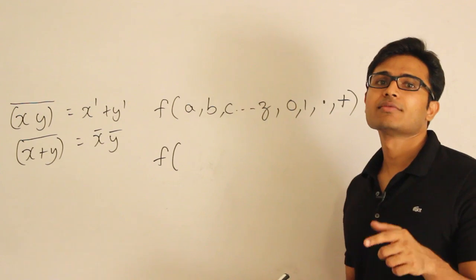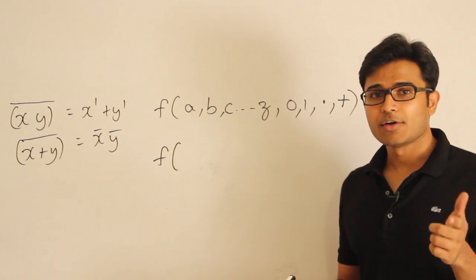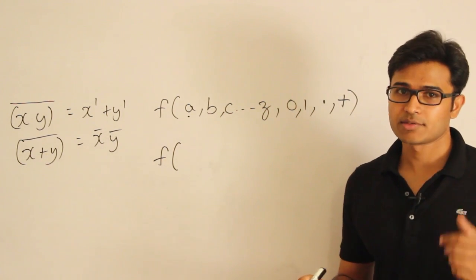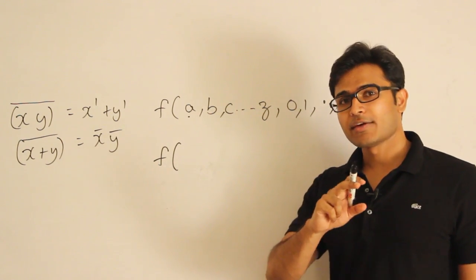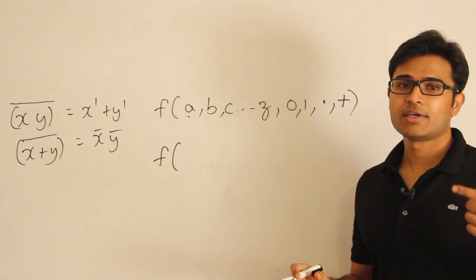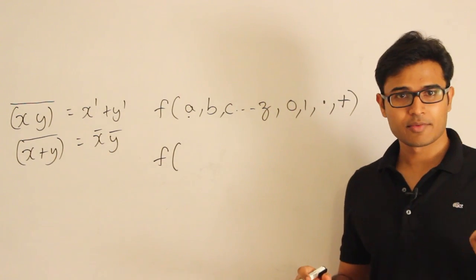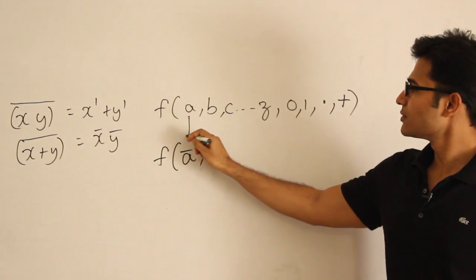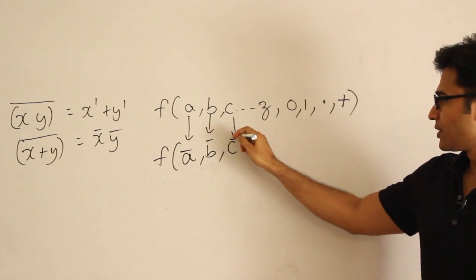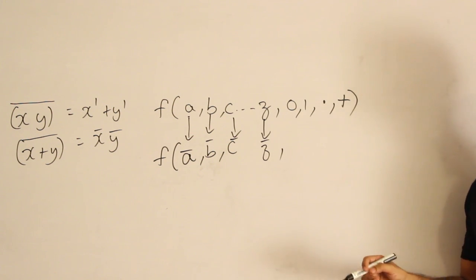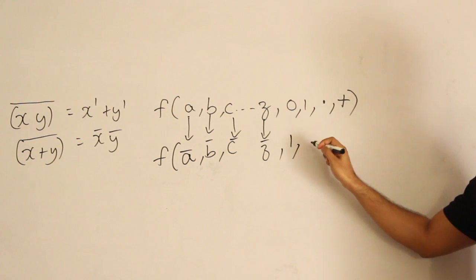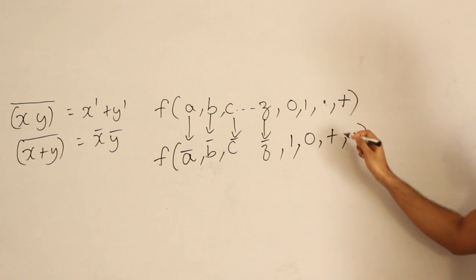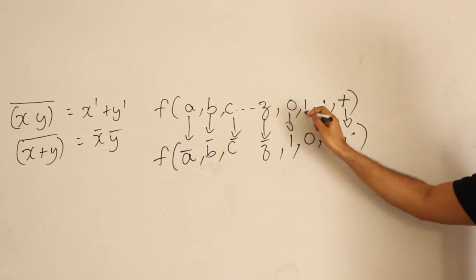If a variable is occurring as a, you replace it with a complement. If the variable is occurring as a complement, you replace it with a. So whatever the occurrence of the literal, you just complement the corresponding literal.